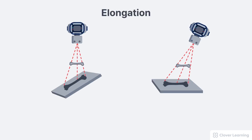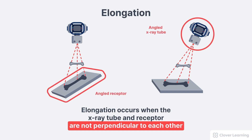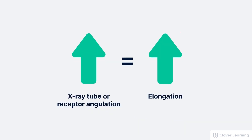Elongation is present when the radiographic image appears longer than the actual anatomy being examined. Elongation occurs as a result of x-ray tube or image receptor angulation. The x-ray tube may be perpendicular to the anatomy but not perpendicular to the image receptor, or the image receptor may be parallel to the anatomy but the x-ray tube may be angled. As the x-ray tube or image receptor angulation increases, elongation increases.